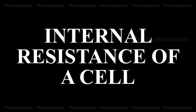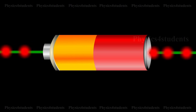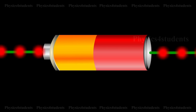Internal Resistance of a Cell. The electric current in an external circuit flows from the positive terminal to the negative terminal of the cell through different circuit elements.